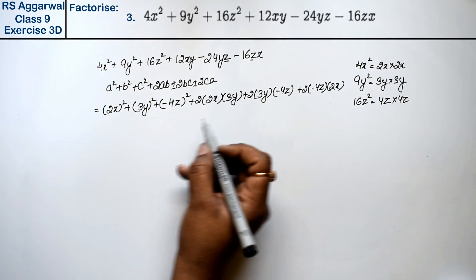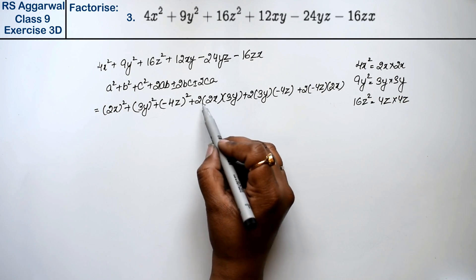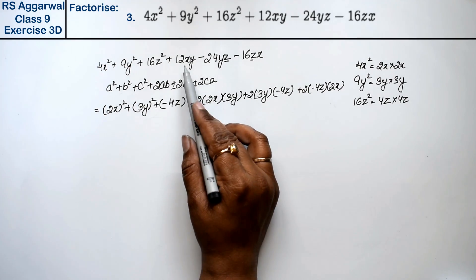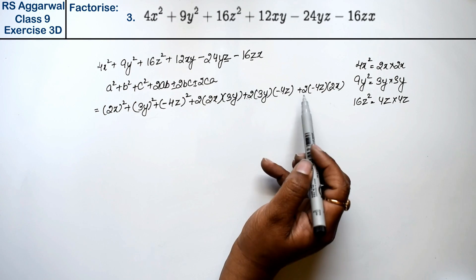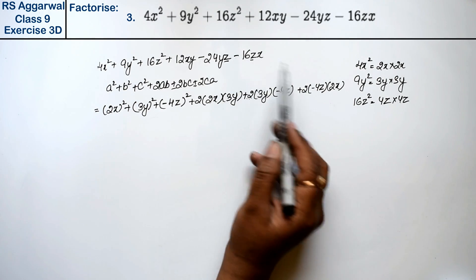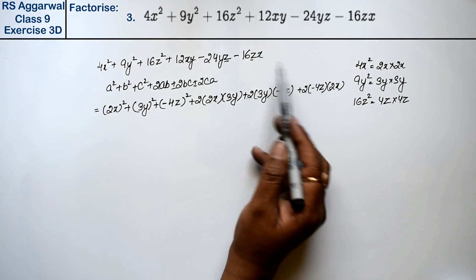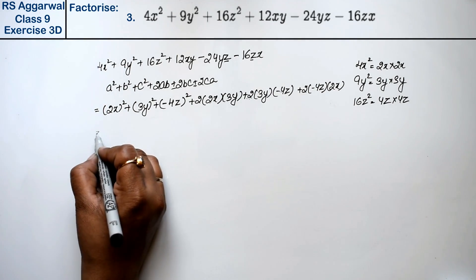Now if we will solve this, then what will come? Plus 2, 2×2 is 4, 4×3 is 12xy. Plus minus, minus, 2×3 is 6, 6×4 is 24yz. Plus minus, minus, 2×2 is 4, 4×4 is 16zx.